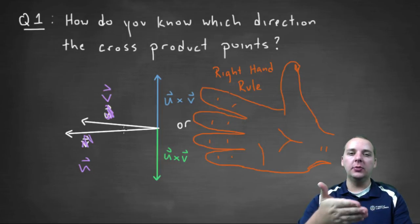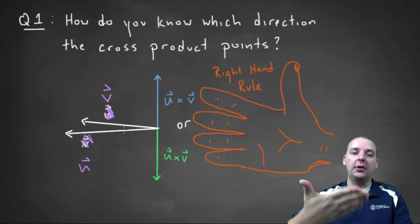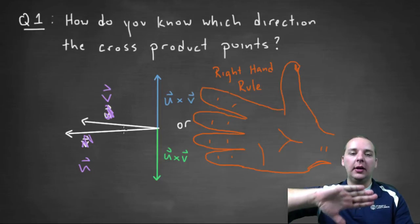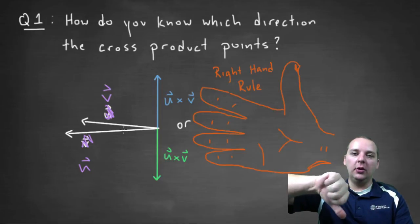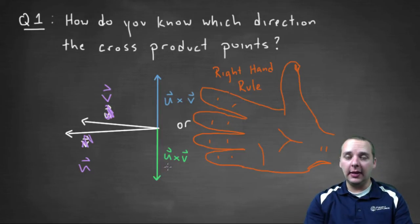And again, remember your hand can only close one direction. I think you would have to turn your hand upside down to start at u and close to v. And your vector then would be the green vector for the cross product that points downwards.